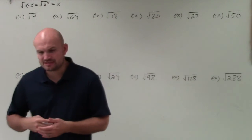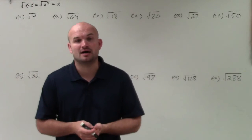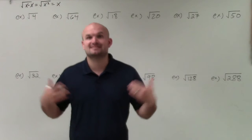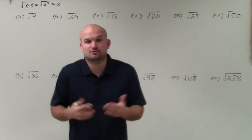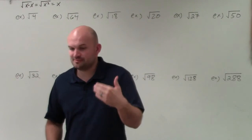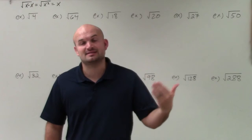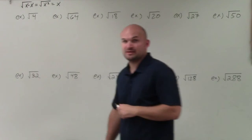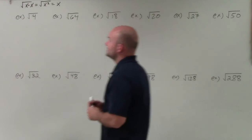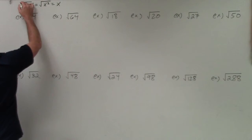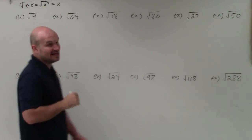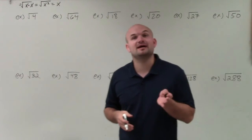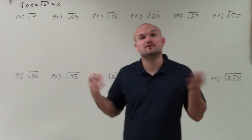Basically, the square root — when we're taking the square root of an expression or of a number — it's asking what number multiplied by itself gives us what we call our radicand, which is under the square root symbol. We don't usually write the square root with an index of 2, but it does have a little 2 there, meaning you multiply the value by itself twice.